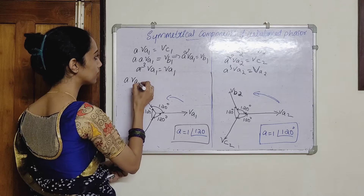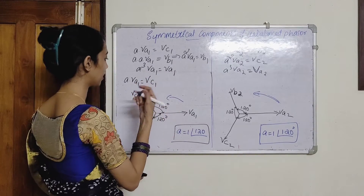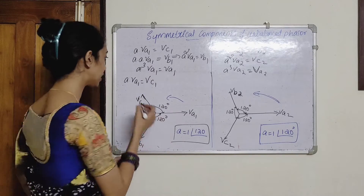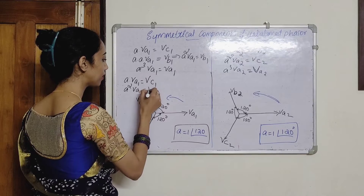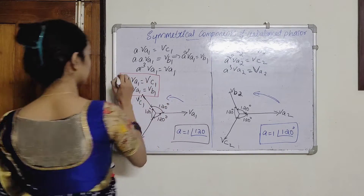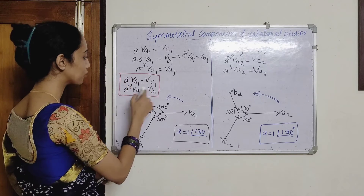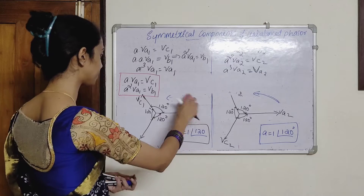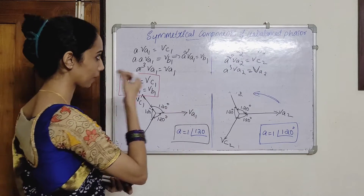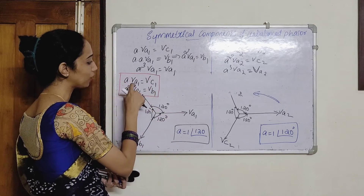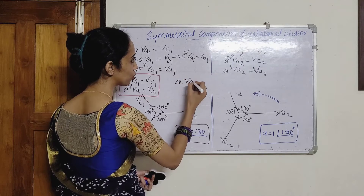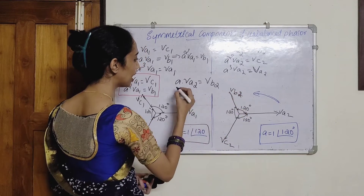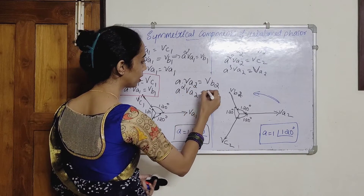A into VA1 is equal to VC1. A-squared into VA1 is equal to VB1. For negative sequence: A into VA2 is equal to VB2, and A-squared into VA2 is equal to VC2.